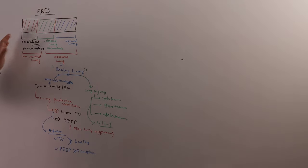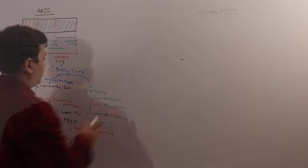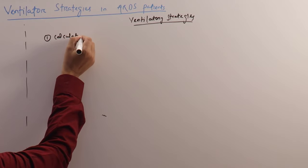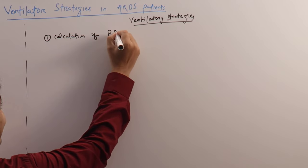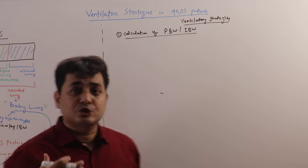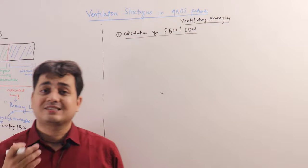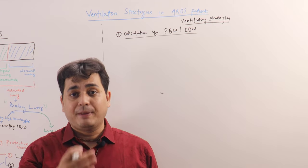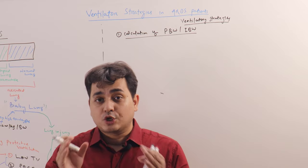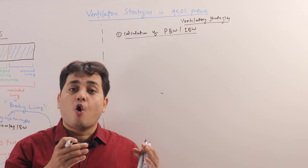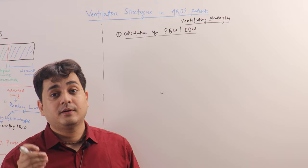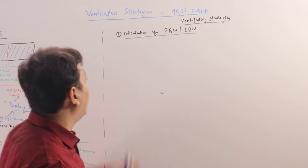This PEEP is to prevent atelectrauma and the low tidal volume is to prevent volutrauma or barotrauma. That is the concept behind the ventilatory strategy in ARDS. Step 1 is calculation of predicted body weight or ideal body weight. In the beginning it was thought that lung volume or size depends on actual body weight, but that is not so. The concept now is that lung size or volume is actually dependent upon the height of the person.